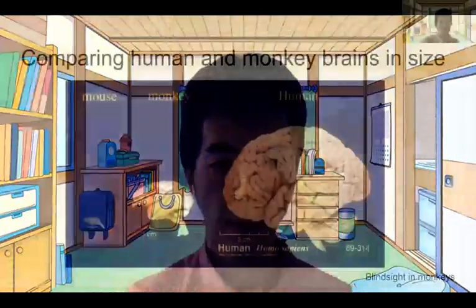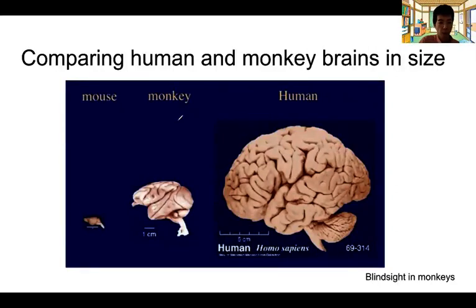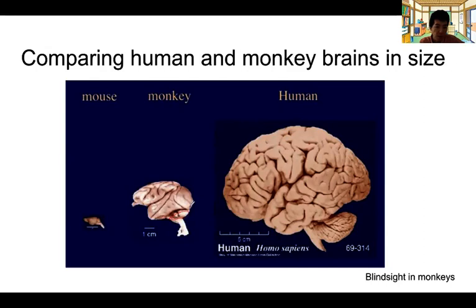In humans, the brain cortex is roughly 15 centimeters from front to back and 10 to 12 centimeters top to bottom, containing roughly 20 billion neurons, or 10^11 neurons. The monkey brain is roughly 5 centimeters front to back and 3 centimeters top to bottom — roughly one third of the human brain — with about 10 times fewer neurons. The cerebellum, visual cortex, prefrontal cortex, somatomotor cortex, and parietal cortex are all identifiable in these comparative views.